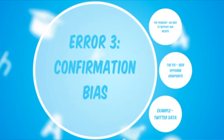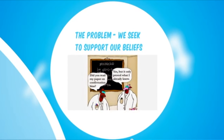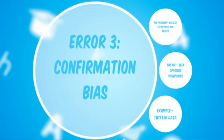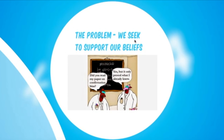Error three: confirmation bias, also known as the echo chamber. Human nature is that we seek to support our existing beliefs, and sometimes we exclude opposing viewpoints to preserve our own beliefs even if they're wrong or biased. There's a scientist joke: 'Did you read my paper on confirmation bias?' 'Yes, but it only proved what I already knew.' That's the problem in a nutshell.